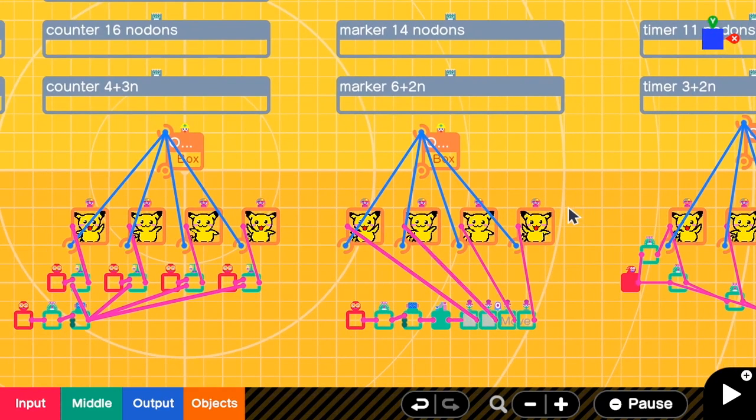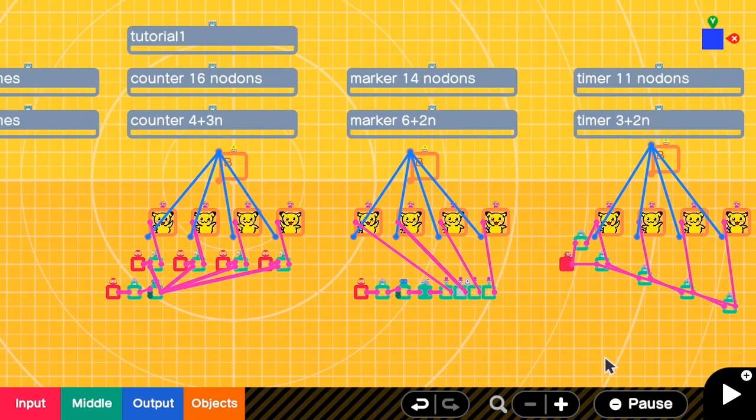But for the marker method and the counter method, you can control it to be bounce like one, two, three, four, three, two, one. So it depends on your use case.